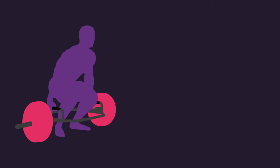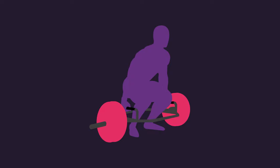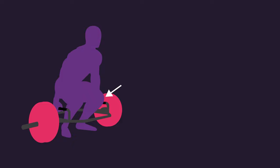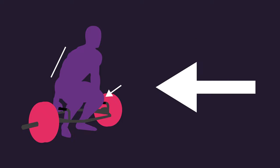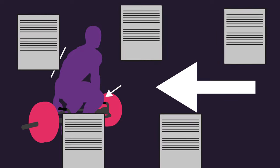Another variance with the trap bar deadlift is in the execution. Most generally perform the movement with a somewhat squat style, where their knees are flexed more and their upper body is more upright compared to a conventional deadlift. However, the trap bar deadlift can also be performed similarly to a conventional deadlift, with less knee flexion, more hip flexion and a more horizontal back. In this video, we will be discussing the squatier variation, as this is the one used by most people and the one used in all the research we will look at.